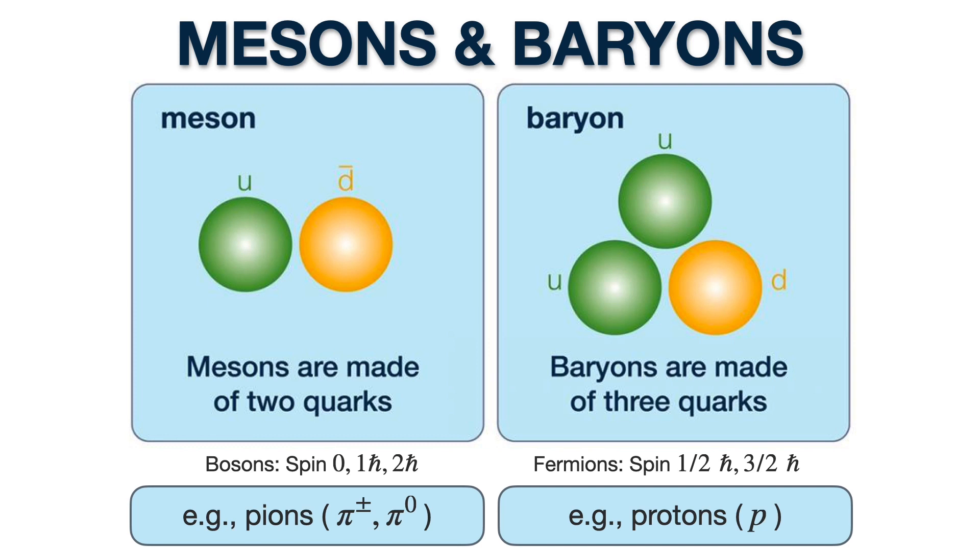First up, we have mesons. Mesons are a bound state of a quark-anti-quark pair. They are considered bosons with integer spin. An example of a meson are pions.